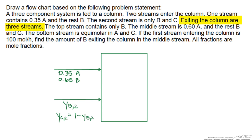Exiting the column are three streams. The top stream contains only B. So one way to write this is that the mole fraction of B, which is 100% is one, so I write it as 1.0B.